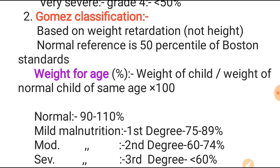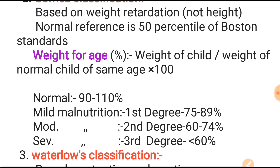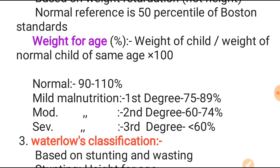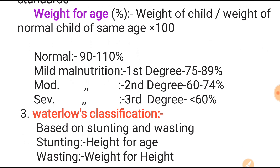In the Gomez classification, the normal value is 90 to 110%. Mild malnutrition (first degree) is 75 to 89%, moderate malnutrition (second degree) is 60 to 74%, and severe malnutrition (third degree) is less than 60%.